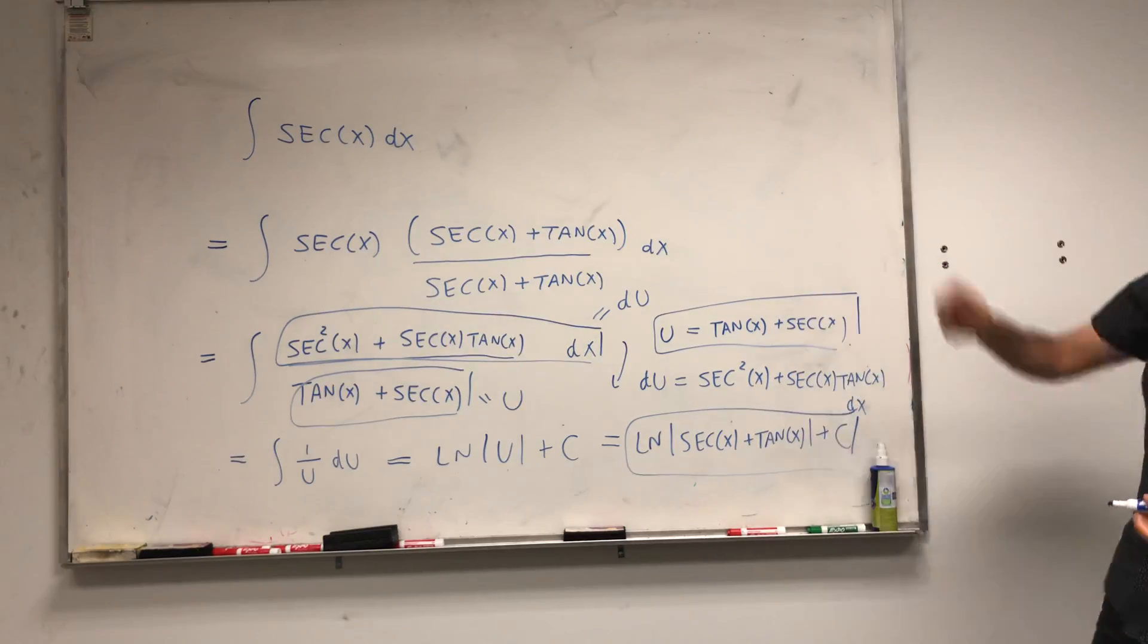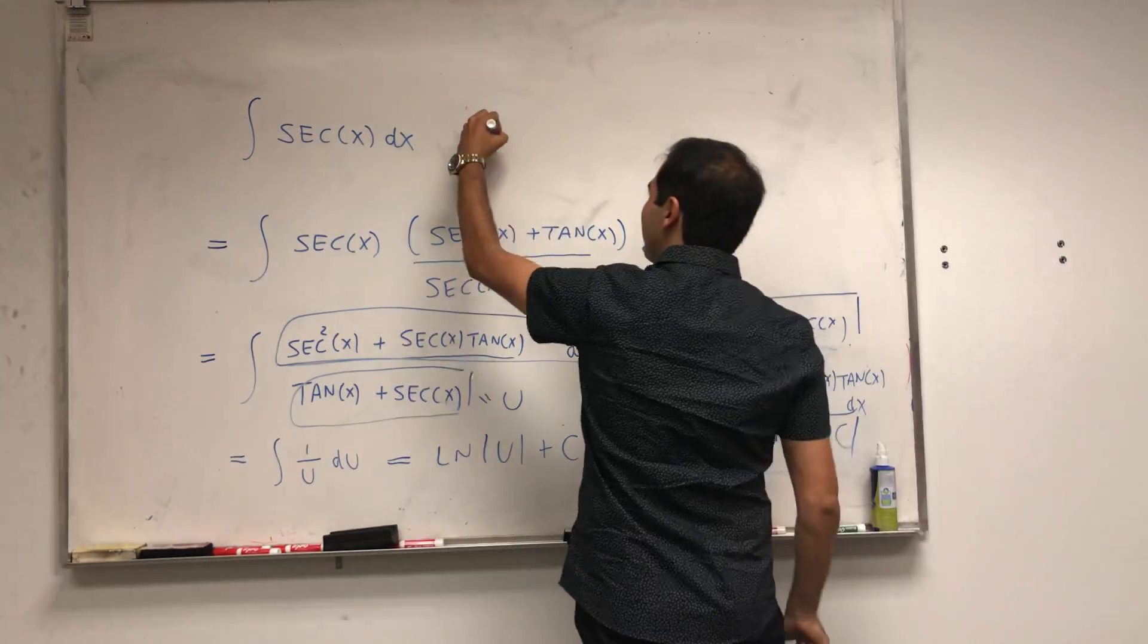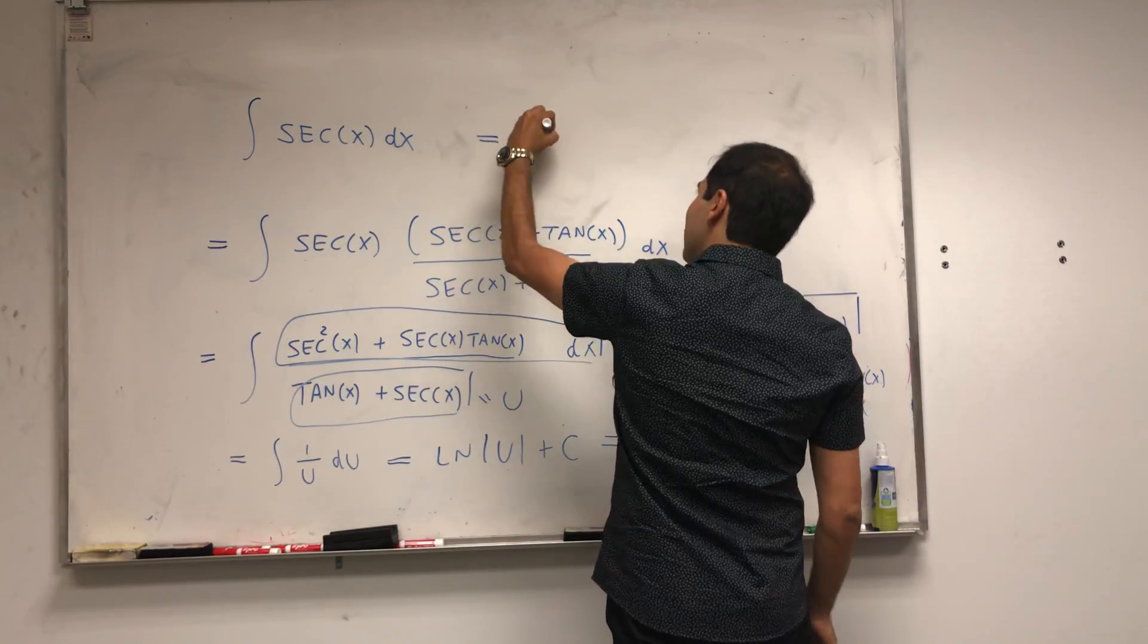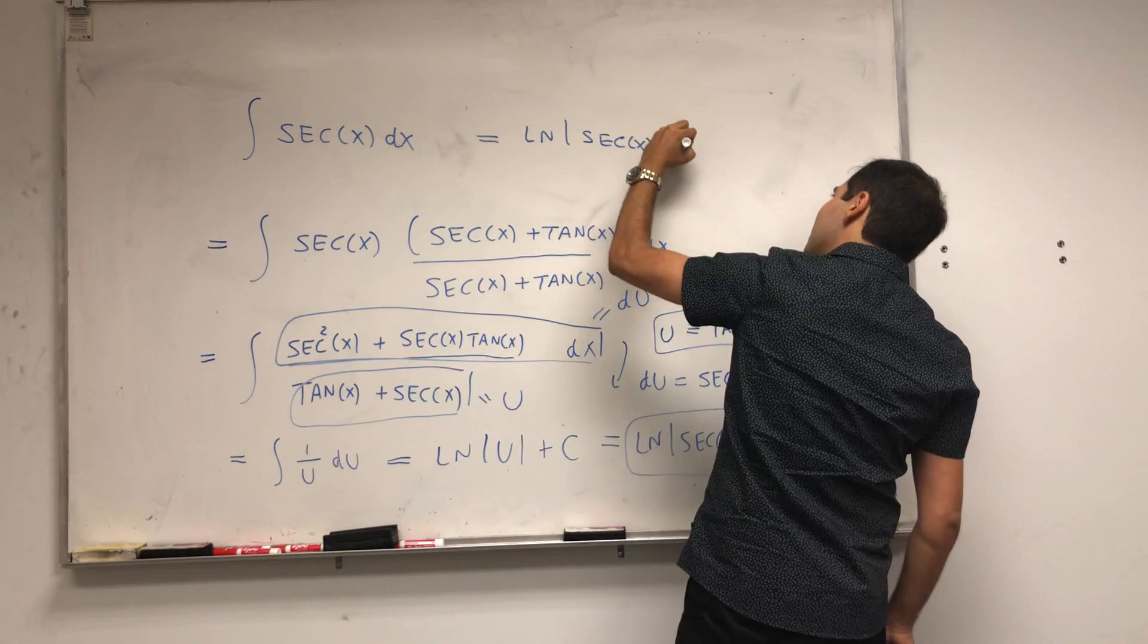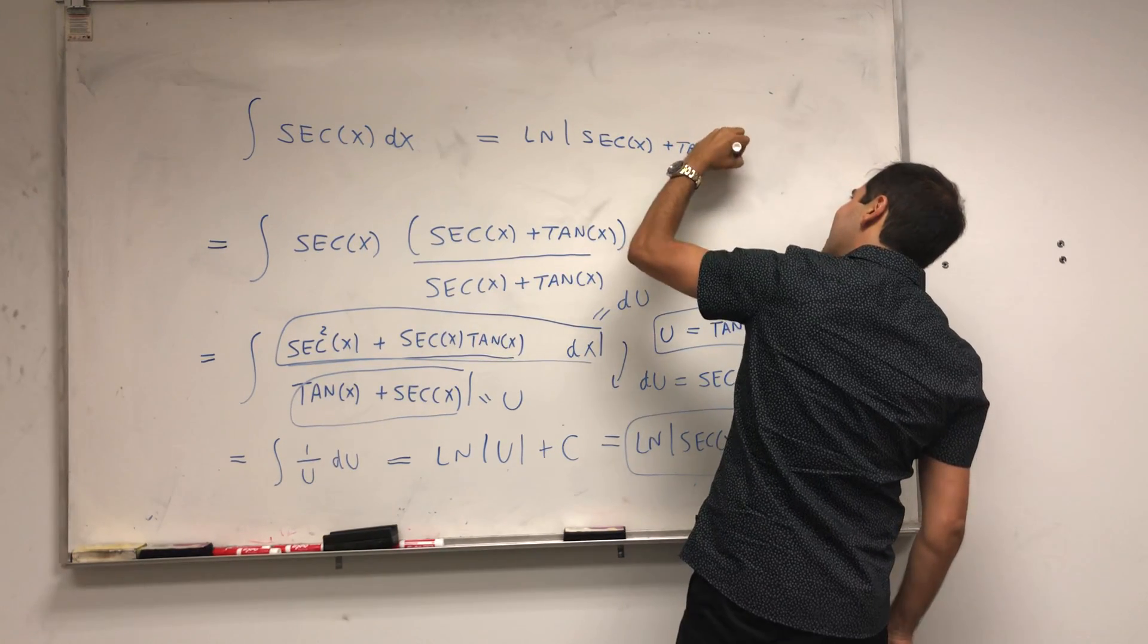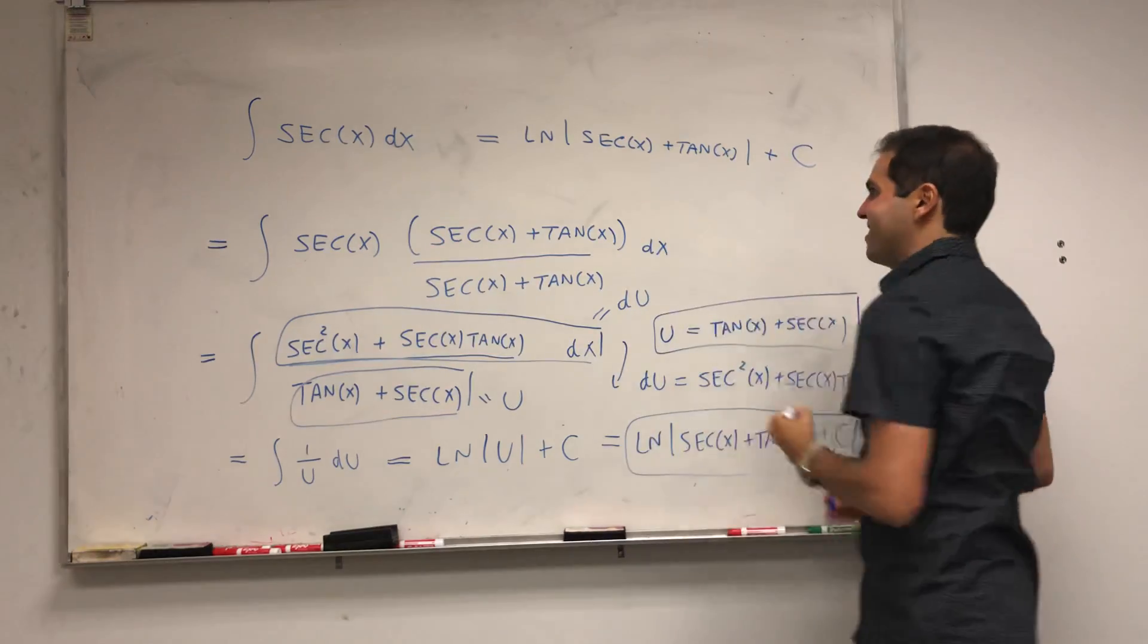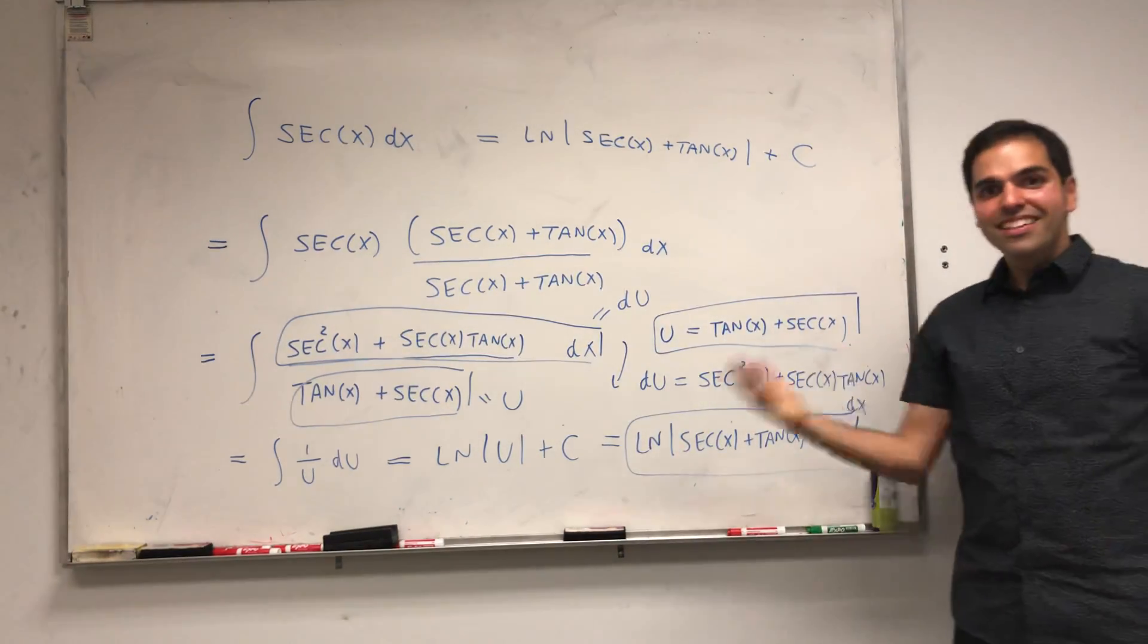So here's a cool thing. We just derived that the integral of secant is ln of secant plus tangent, plus a constant.